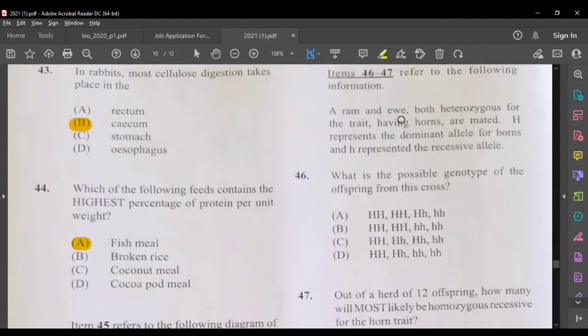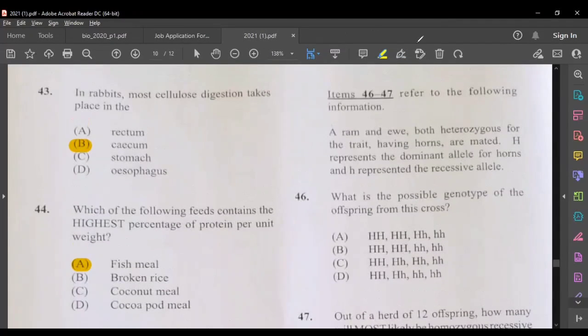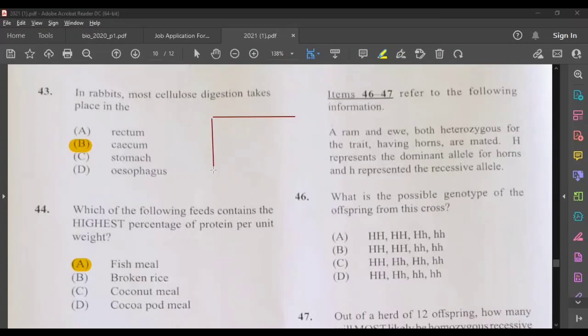Question 46, a ram and ewe, both heterozygous for a trait having horns are mated. H represents the dominant allele for horns and lowercase h represents the recessive allele. What is the possible genotype of the offspring from this cross? We have to do a quick cross to see what are the possible offspring. So let's draw a square box where we can have a Punnett square. So both heterozygous, if both are heterozygous, then both would have uppercase and a lowercase. So here we have a homozygous dominant allele. Here we have a heterozygous dominant pair. This is another heterozygous pair. And then we have a recessive allele, homozygous recessive.